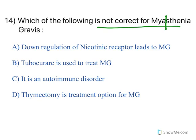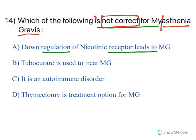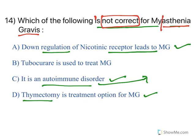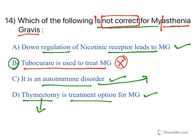Which of the following is not correct for myasthenia gravis? 'Myo' means muscle, 'asthenia' means weakness, 'gravis' means serious — so myasthenia gravis is serious muscle weakness. Down-regulation of nicotinic receptors leading to myasthenia gravis is true. It being an autoimmune disorder is true. Thymectomy is a treatment option because removing the thymus gland reduces the number of immune mediators attacking the muscles. However, tubocurarine being used to treat myasthenia gravis is NOT true — instead, drugs like physostigmine and neostigmine are used.